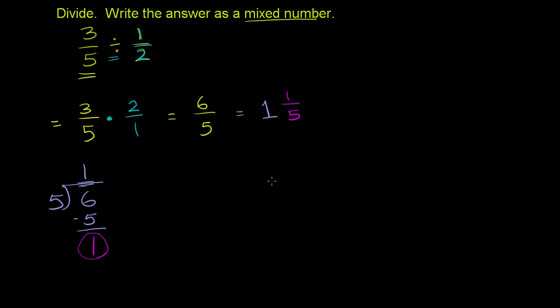If I were to take 4 objects—so I have 4 objects: 1, 2, 3, 4. And if I were to divide it into groups of 2, so I want to divide it into groups of 2. So that is 1 group of 2, and then that is another group of 2. How many groups do I have? Well, 4 divided by 2, I have 2 groups of 2. So that is equal to 2.